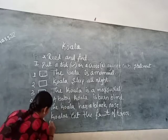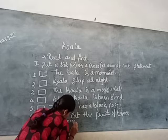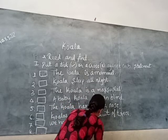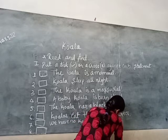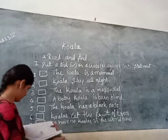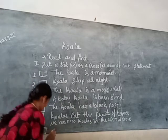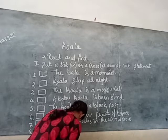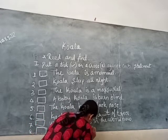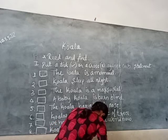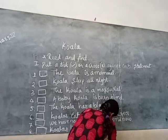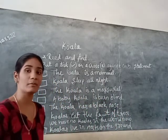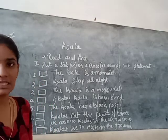We have more Koilas in the water now. Last one: Koilas are in the nests in the ground. Koilas live in nests; nests are on the ground. So now we have to put a tick or cross mark according to the statement, whether it is right or wrong.